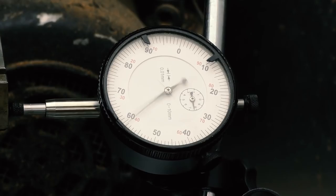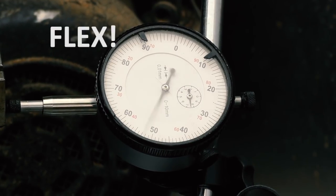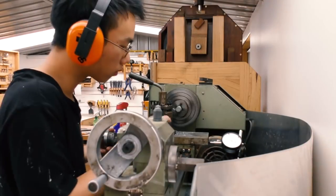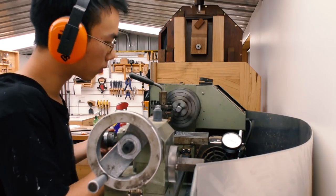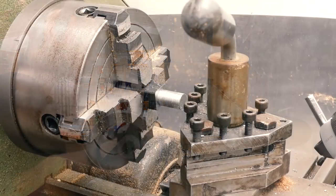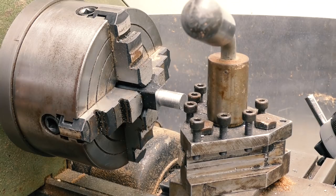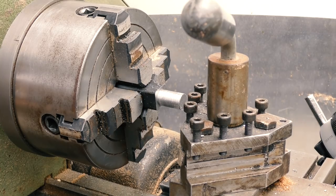I did put a dial indicator on the bed of the lathe to account for some of the flex in the cross slide. However, it wasn't very effective due to the vibrations of the lathe. You know how I said the inner diameter of the bearing was 12 millimeters?